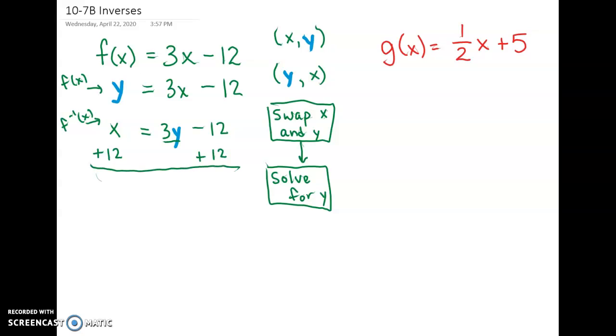On the left-hand side, we have x plus 12. x and 12 are not like terms, so we just write x plus 12. On the right side of the equation, these 12s go away, and we now have 3y.